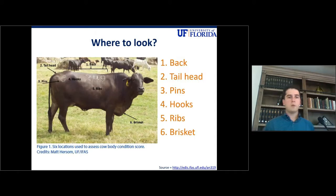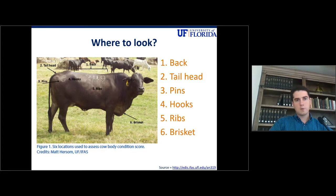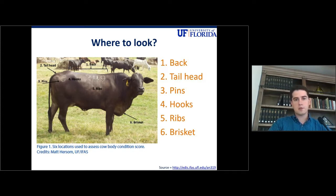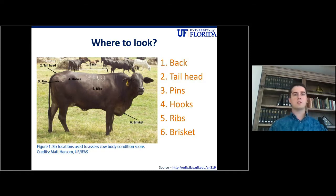Now, if you're not familiar with it, where do we look to do body condition score? We have six locations. One is the backbone. Second is the tail head. The third are the pins. The fourth are the hooks. The fifth are the ribs. And the sixth is the brisket. Not necessarily in this order, but those are the six locations we focus on to give an accurate body condition score to an animal.